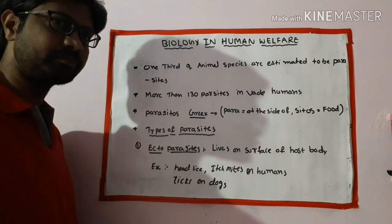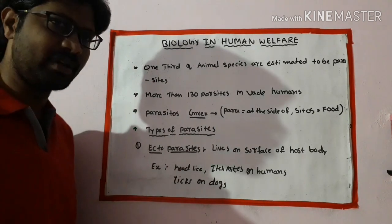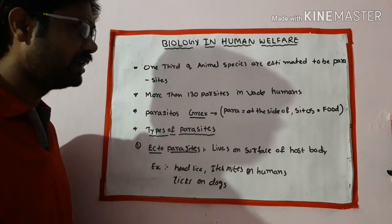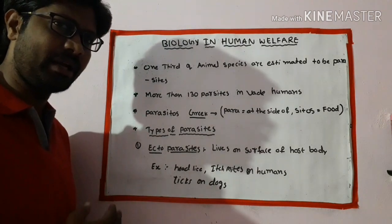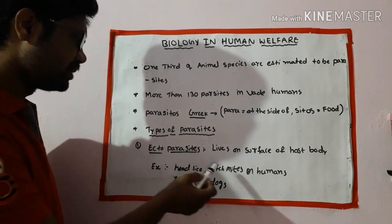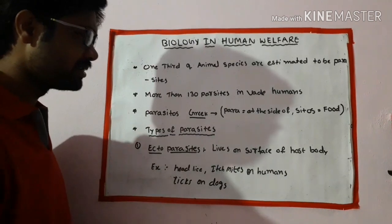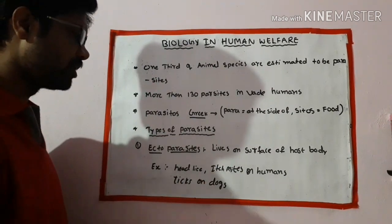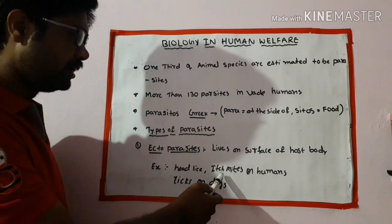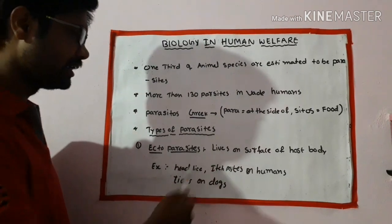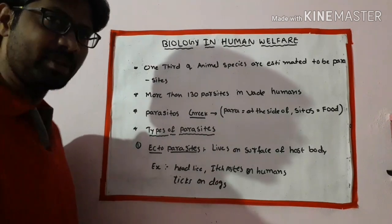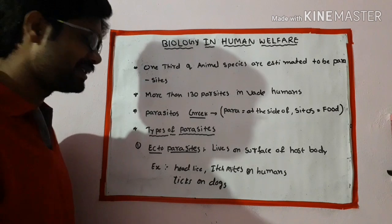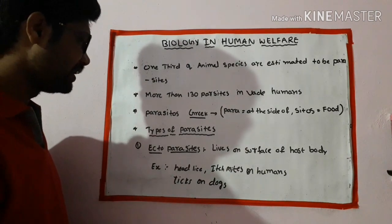The first type is ectoparasites. These are external parasites that live on the surface of the host body. Examples include lice, itch mites, ticks on dogs, and fleas.